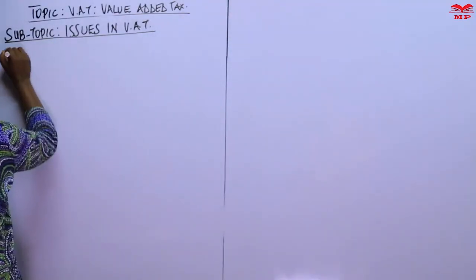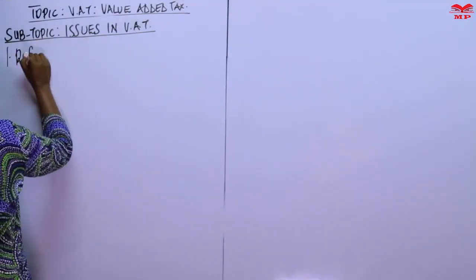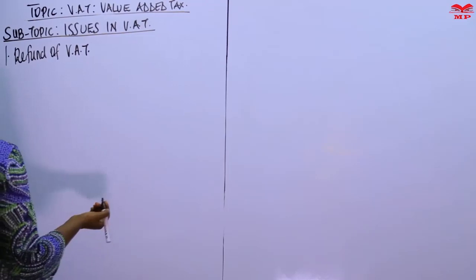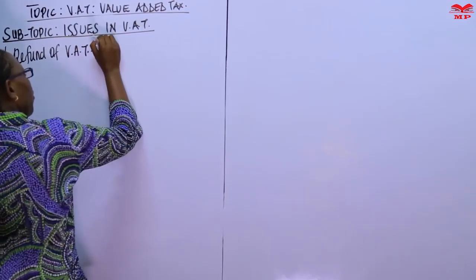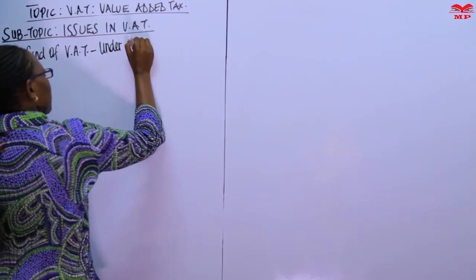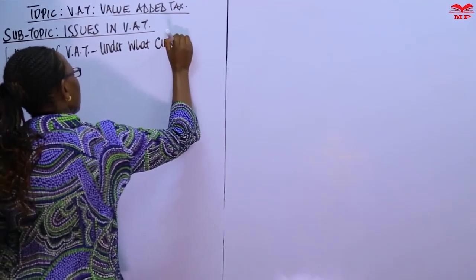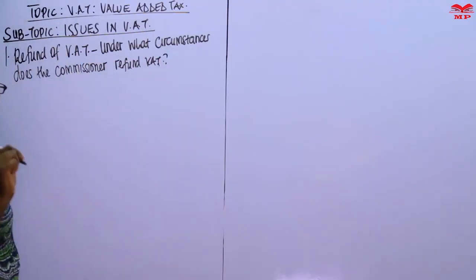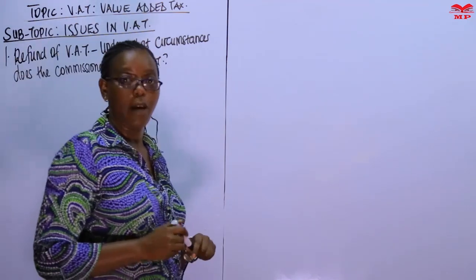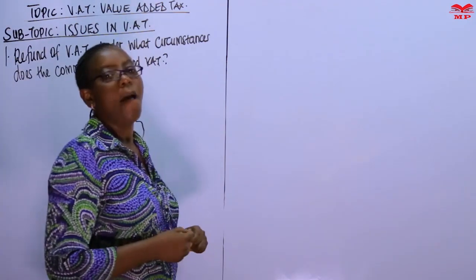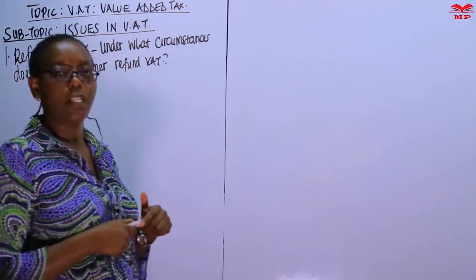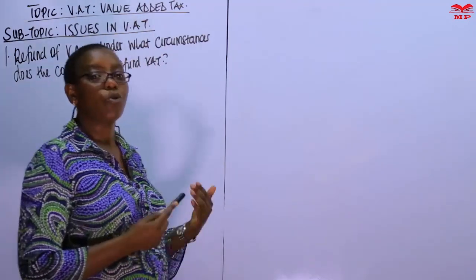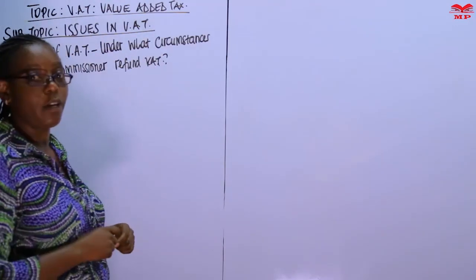Refund of VAT. The question is: under what circumstances? For the commissioner to refund VAT, the taxpayer — the registered person — must make an application in writing and must prove and provide documentation as to why they should be refunded the VAT that they've already paid.